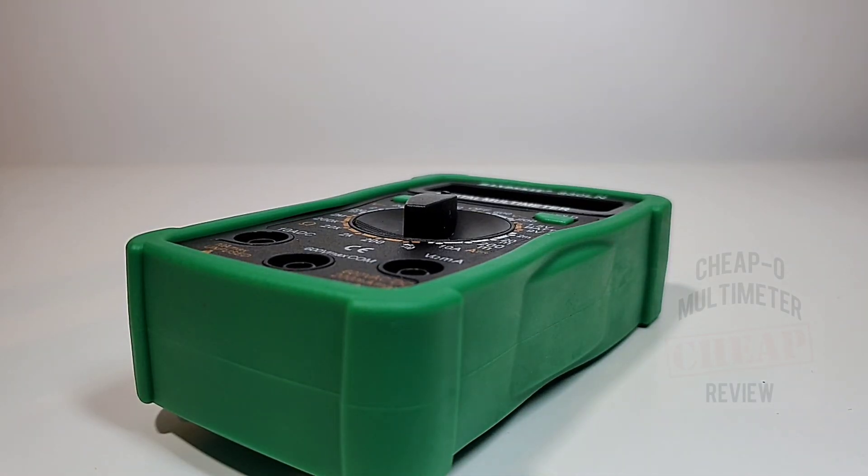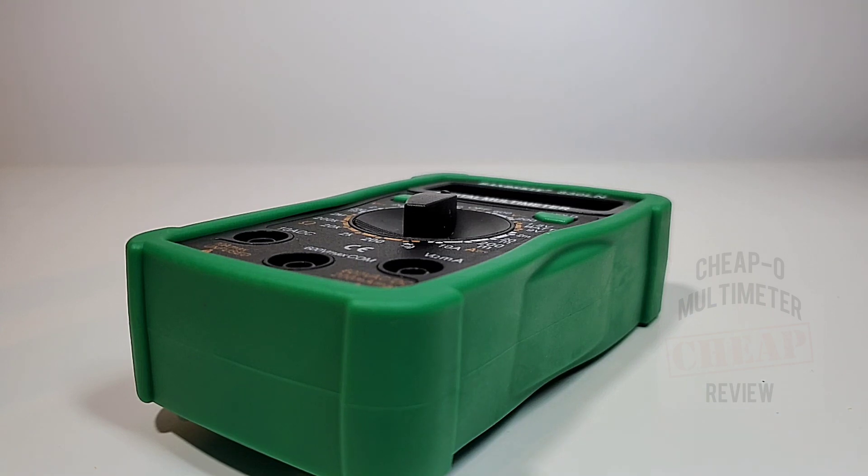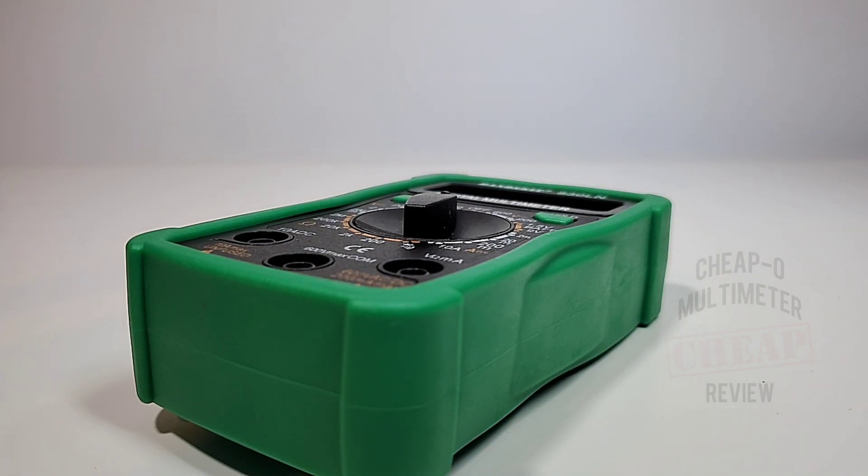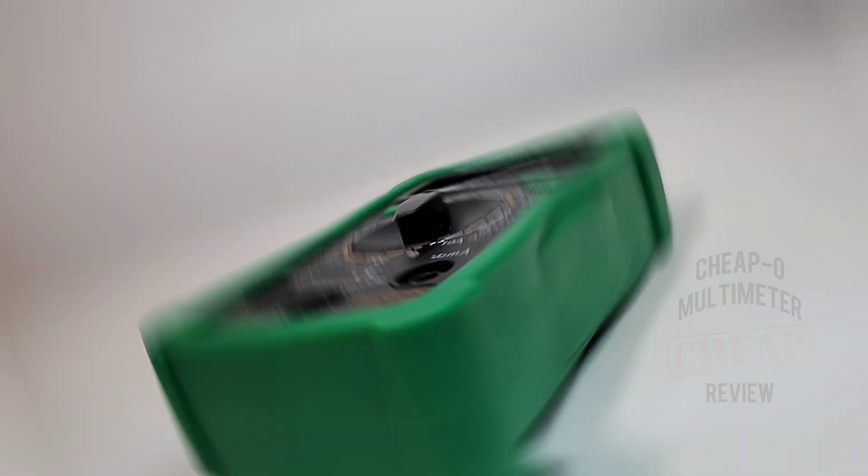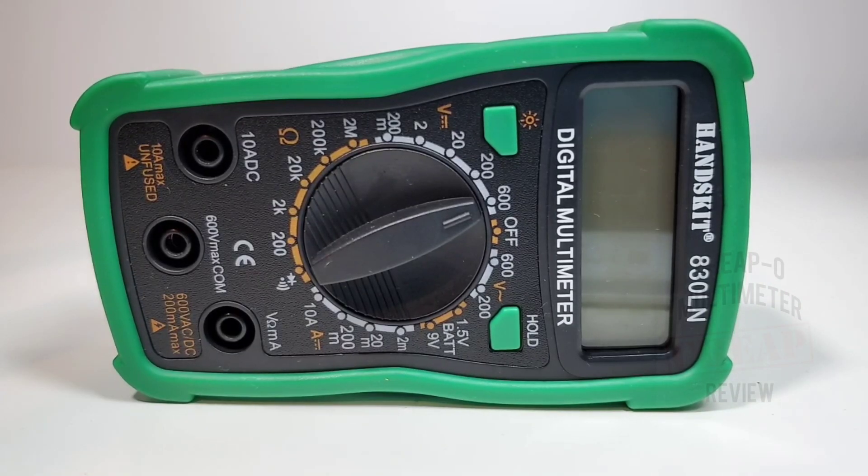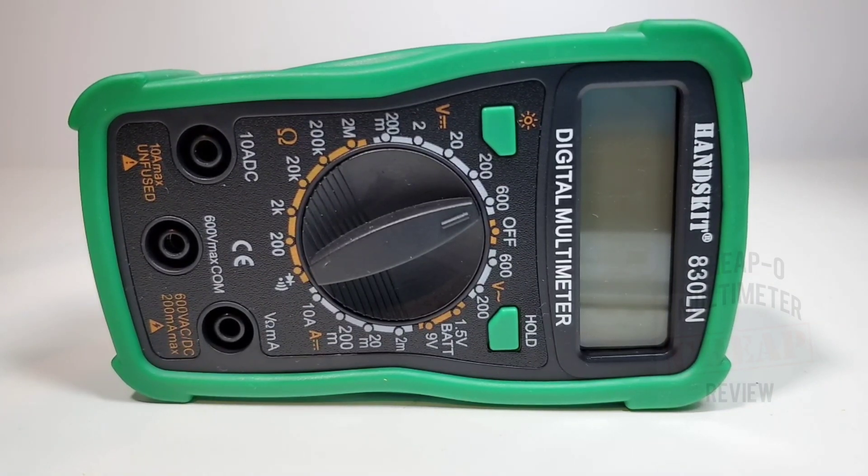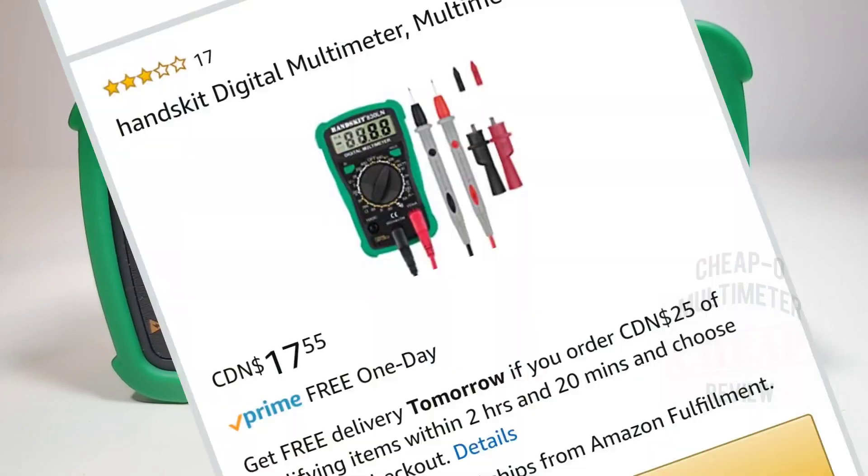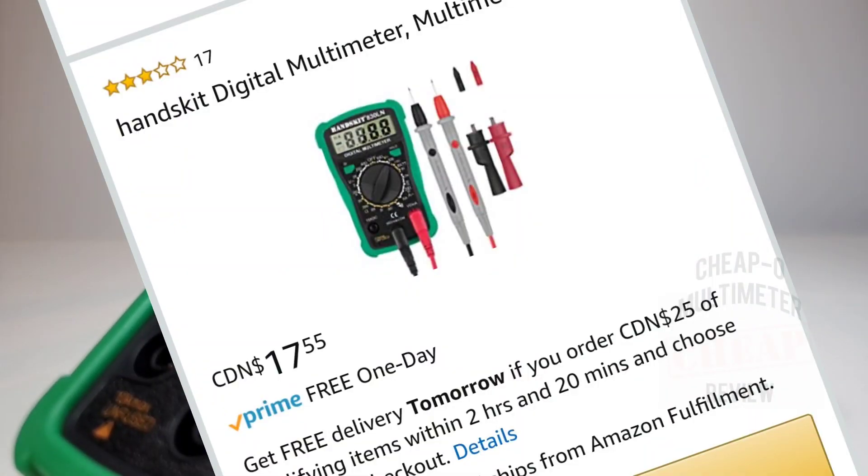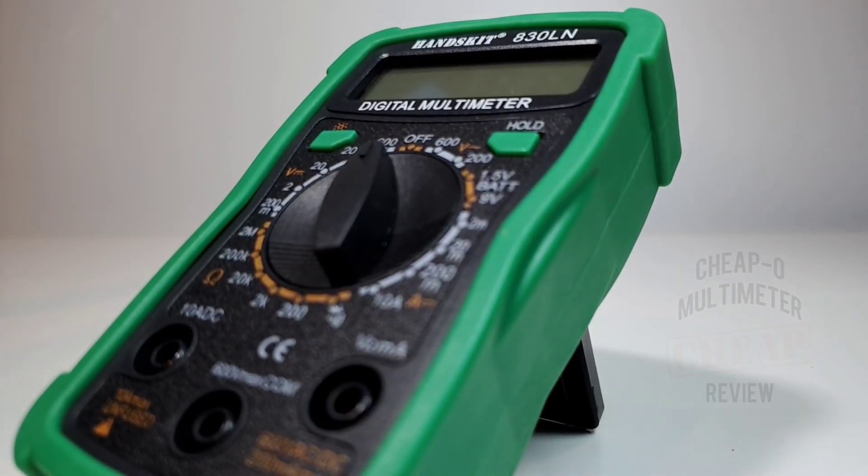I think I might have mentioned this in the last review but man oh man we are getting lots of green multimeters as of late. This green just works for me, it's like this green hornet thing going on. Green is a go. This little beast ships via Amazon and it did not cost me an arm and a leg, no this was cheap cheap like borscht. 17 bucks Canadian is all the little Handskit 830LN sent me back, so this is in the cheapo realm.